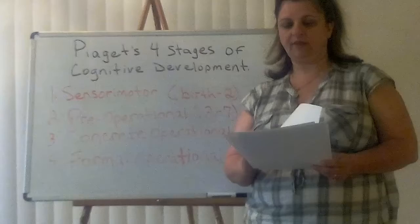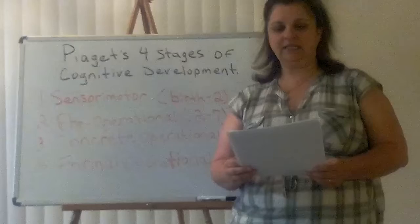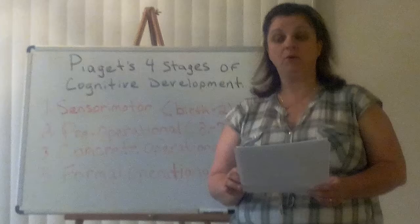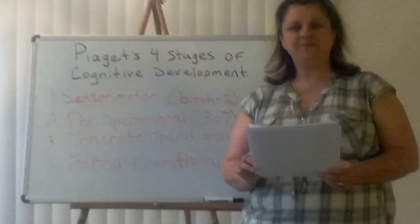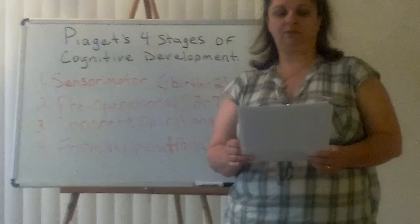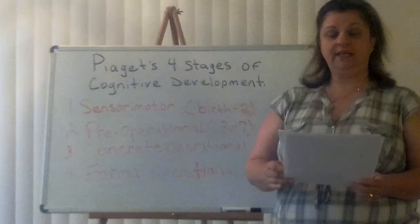Stage four: formal operational, ages eleven to fifteen, some say, but up to adulthood. The adolescent reasons in more abstract and logical ways. Thought becomes more idealistic and abstract, incorporating the principles of formal logic. The ability to generate abstract propositions, multiple hypotheses, and their possible outcomes is evident. Thinking becomes less tied to concrete reality. It can handle proportions, algebraic manipulation, and other purely abstract processes. The formal operational stage begins at approximately age eleven and lasts into adulthood, during which people develop the ability to think about abstract concepts and logically test hypotheses.